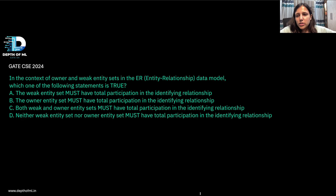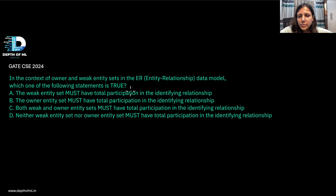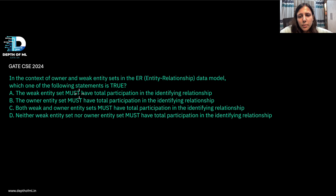The next question is from GATE CSE 2024, about owner and weak entity sets in the ER data model. Which of the following statements is true? Option A says: the weak entity set must have total participation in the identifying relationship. This is correct — the weak entity is dependent on the owner entity for its identification, so total participation is required.